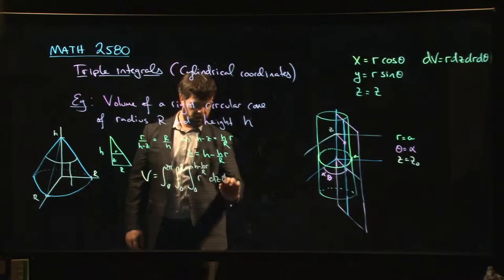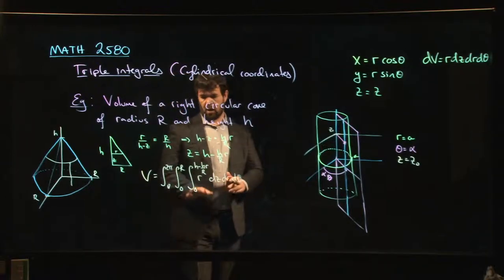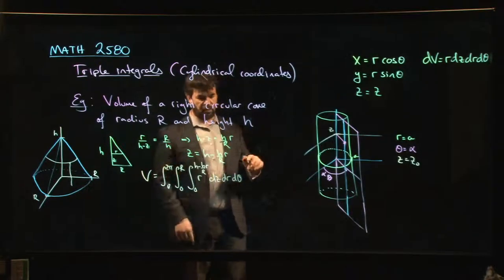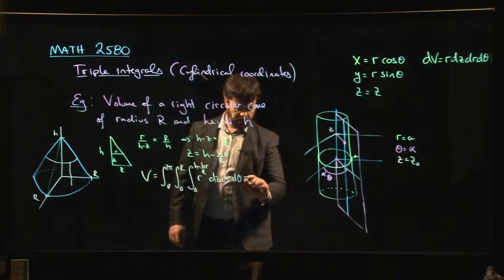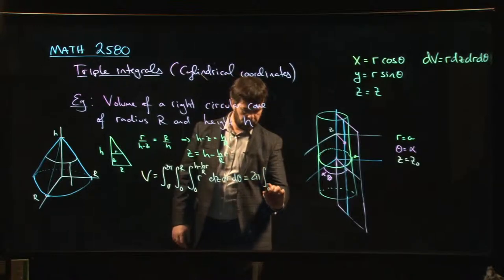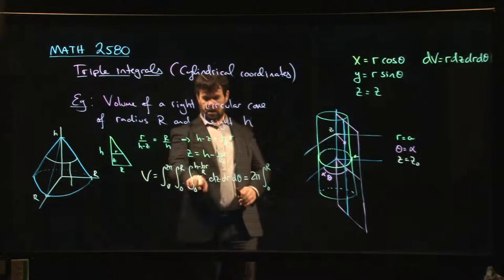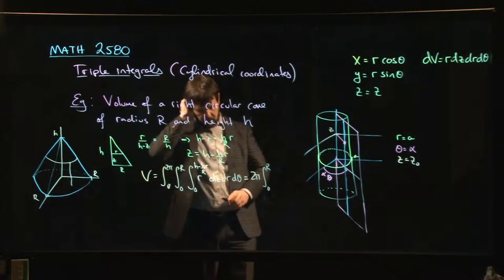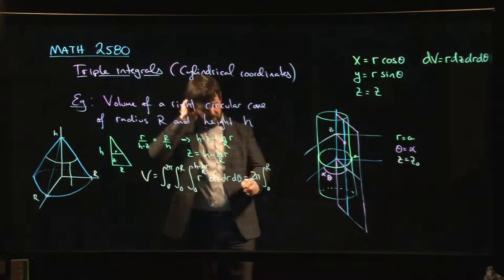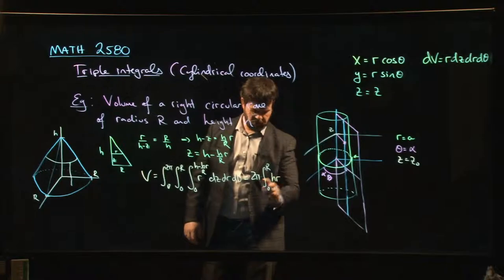So Z goes from 0 to H minus H over R times R, and we're going to do R dZ dR dθ. I can actually do the theta integral right away because there is no dependence on theta anywhere in this thing, so I have 2π times the integral from 0 to R.